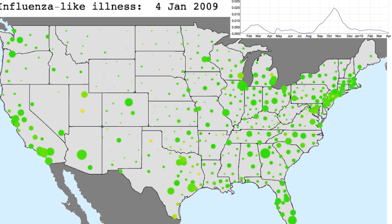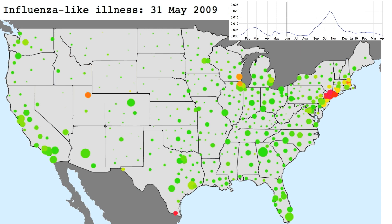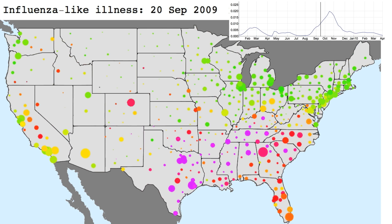We've been studying the pandemic in 2009 in the US of influenza. We see here how the pandemic in 2009 unfolds in the US. Circles mark different locations and the area of the circle is proportional to the population size in that place. So the large circles correspond to major cities. The colour of the circle relates to the number of people going to their doctors with influenza-like illness.